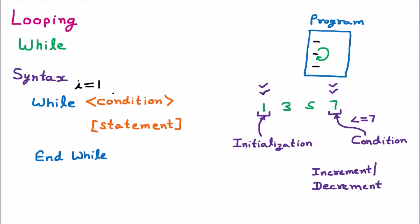So we write: while i less than or equal to seven. That is the condition applied. The third thing is increment or decrement. We check the difference between the first and second numbers: three minus one equals two. Since two is positive, this is an increment — the value of i should increment by two.